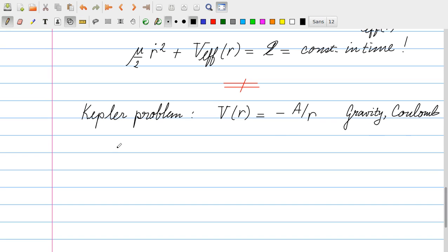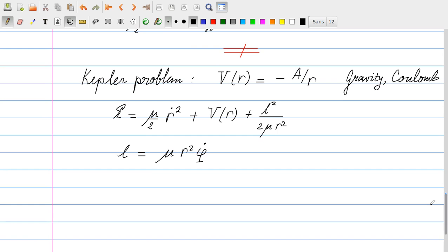So we emphasize again that we have two conserved quantities, one being E, which I will write again. It's mu over 2 r dot squared. And now I will write the V effective explicitly. It's plus the V as a function of r. So that's my minus a over r. And then there is an additional term, which is L squared over 2 mu r squared. And the L is also a conserved quantity. It's mu r squared phi dot. So these two guys are conserved in time.